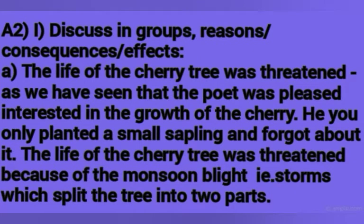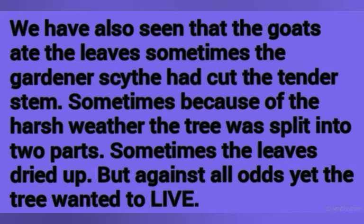Let us discuss question E2 — discussed in groups: reason, consequences and effects. Sub-question E1 says that the life of the cherry tree was threatened. The poet was least interested in the growth of the cherry tree; he had only planted it and forgot about it. Its life was threatened by the monsoon blight — storms which split the tree into two parts, goats eating the leaves, the gardener's scythe cutting the tender stems, harsh weather, and leaves drying up. But against all the odds, the tree wanted to live — without any extra care it stood strong and overcame all the hurdles.